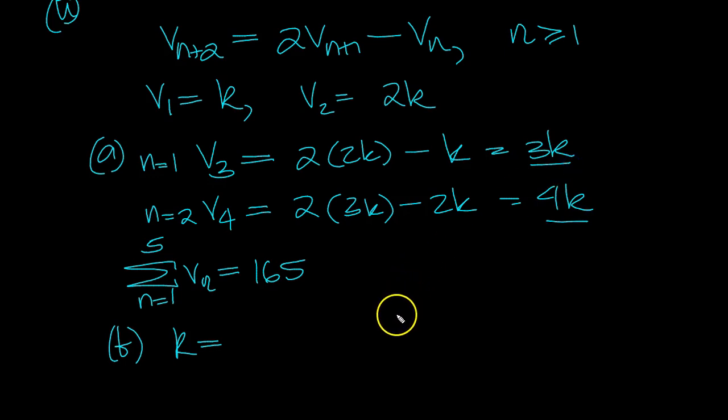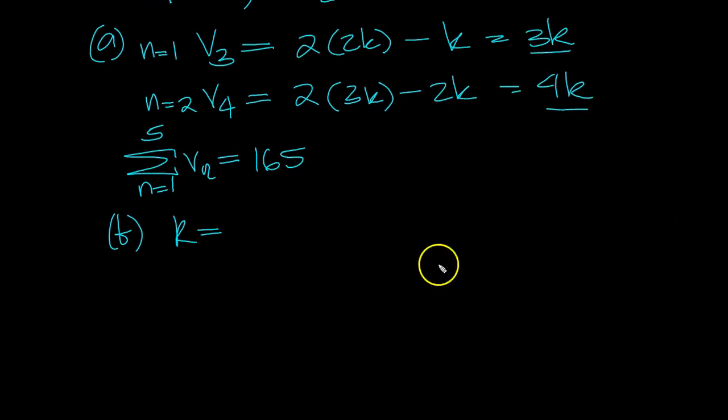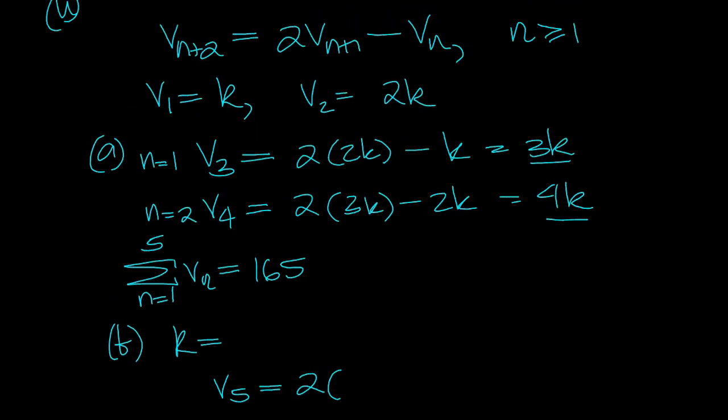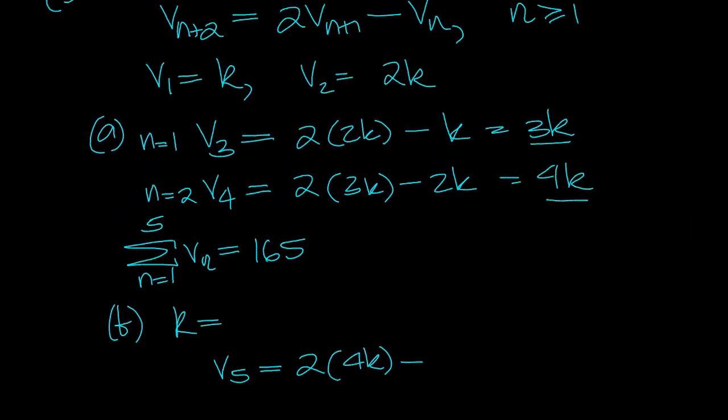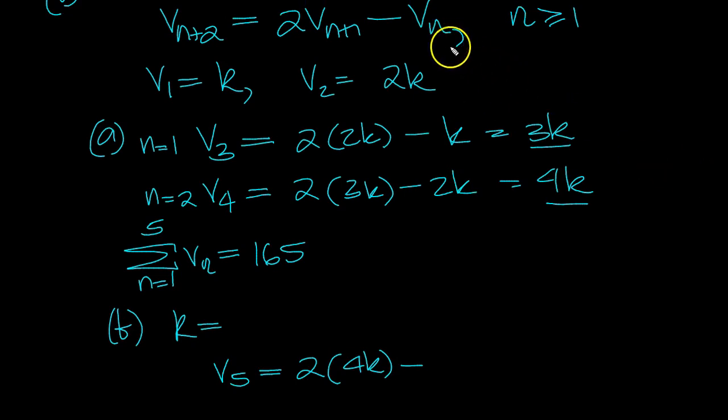Okay, so v5 then, what would that equal? 2 lots of v4, isn't it? Yeah, 2 lots of v4, minus v3, n is 3, v3 is 3. I think minus 3 is 5k.